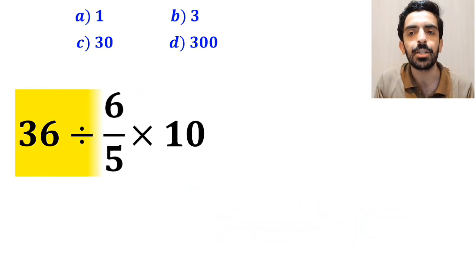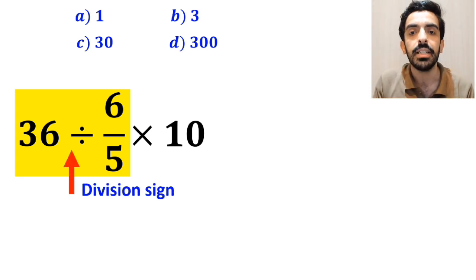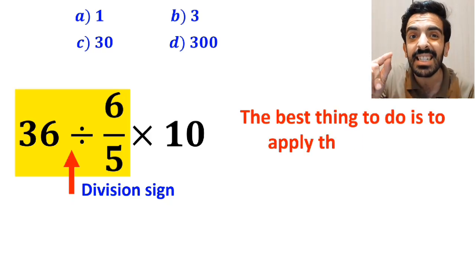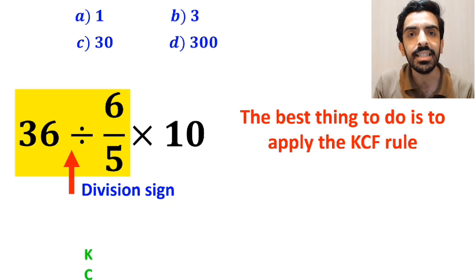So, we'll start with the expression 36 divided by 6 over 5. Okay, whenever we see a division sign between two terms, the best thing to do is to apply the KCF rule.